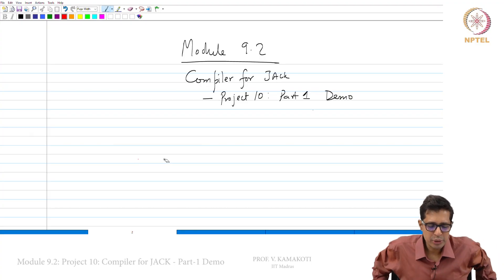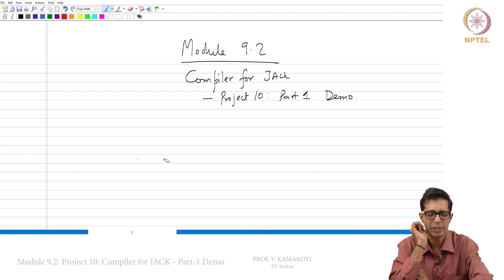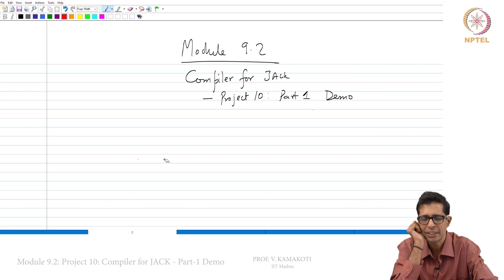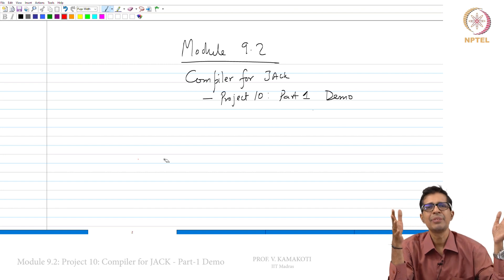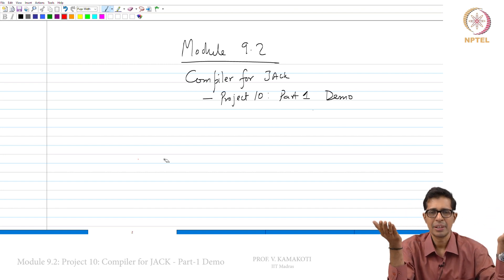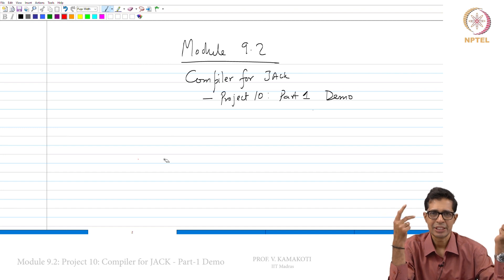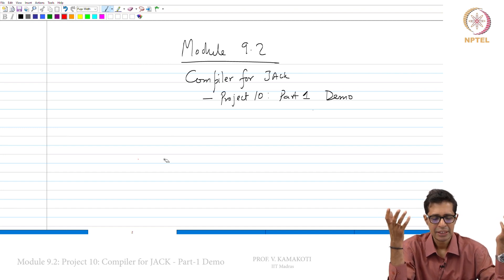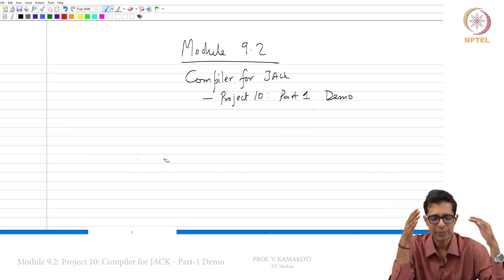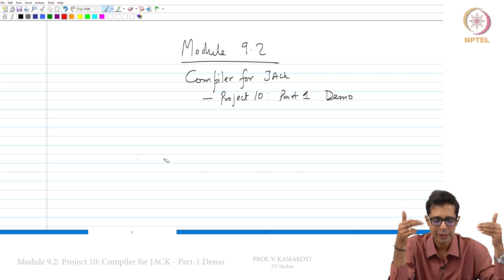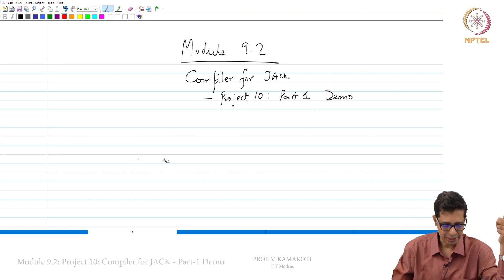Welcome to module 9.2. This will be the first part of project 10, namely the compiler for Jack. In project 10 we will be doing the front end of the compiler, which has two parts: tokenization and then parsing. In module 9 we have already seen what tokenization is, and we will give you a demo in module 9.2 regarding tokenization.